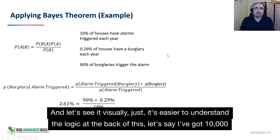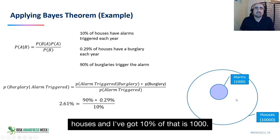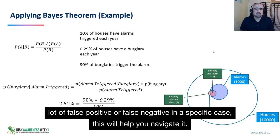Let's see it visually so it's easier to understand the logic at the back of this. Let's say I've got 10,000 houses and 10% of that is a thousand. It's quite powerful because when you start to have complex causes or want to understand if there are a lot of false positives or false negatives, in a specific case this will help you navigate it. Let's get back to the theorem.